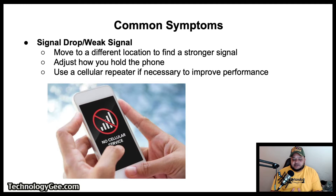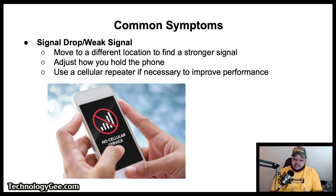The first common symptom is signal drop and weak signals. The easiest way to mitigate this is to simply move to a different location to pick up a stronger signal, or adjust how you hold the phone. If cellular connections are good outside the office or home but poor inside, you can use a cellular repeater to help improve performance.